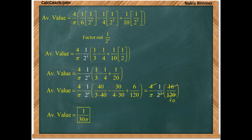Forty minus thirty is ten. Ten plus six is sixteen. We have sixteen over one twenty. But this sixteen and the two to the fourth cancel out. Then the four can cancel the one twenty and turn into a thirty. For a final answer of one over thirty pi.